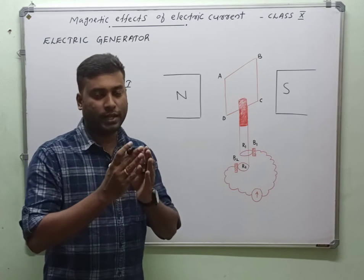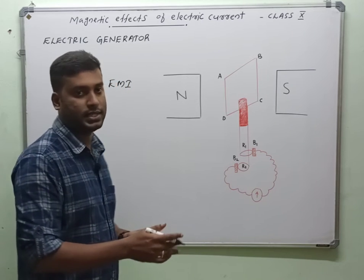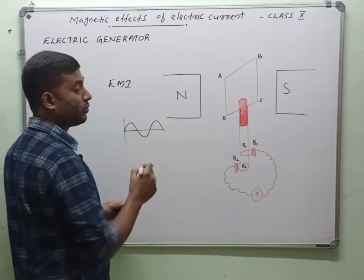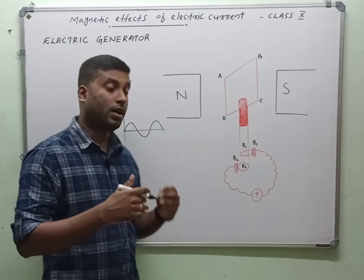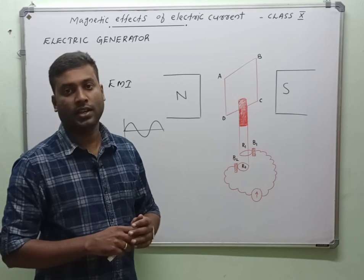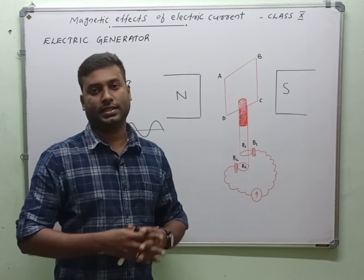So when we are depicting or plotting the variation of voltage or current of this electric generator, we are getting a graph like this. So this voltage or current has this alternating nature. Their magnitude and direction is changing. So we can produce alternating current using these electric generators.